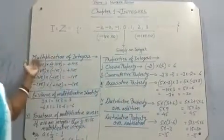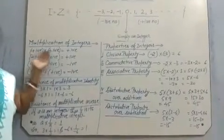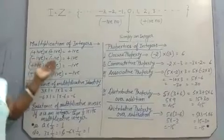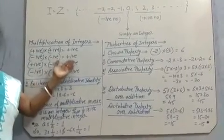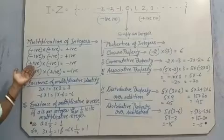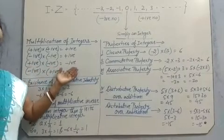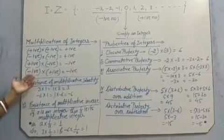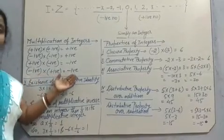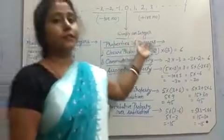Now, multiplication of integers. If we take two positive numbers it gives a positive number. If we take two negative numbers it also gives a positive number. If we take one positive and one negative number, this gives a negative number. And similarly, one negative and one positive number gives a negative number.